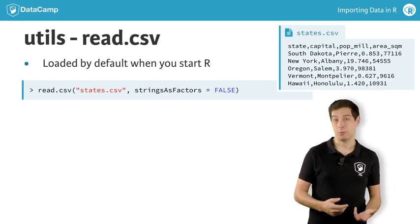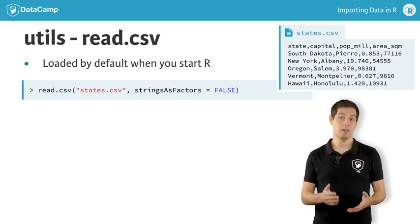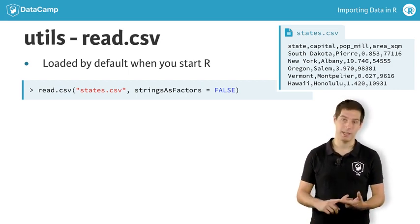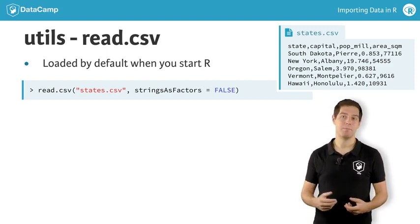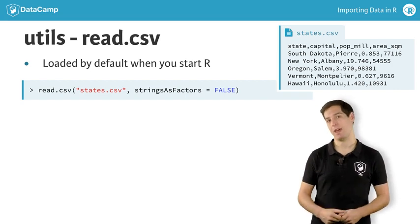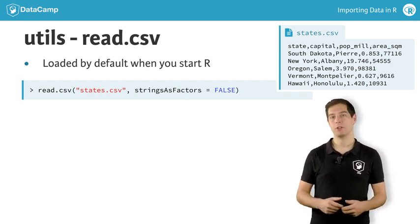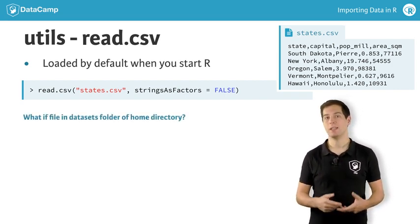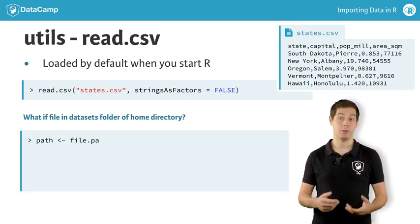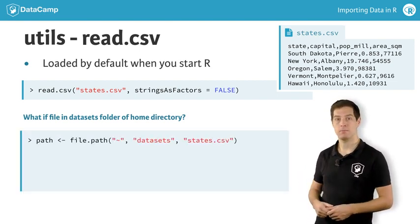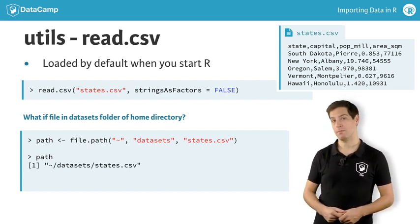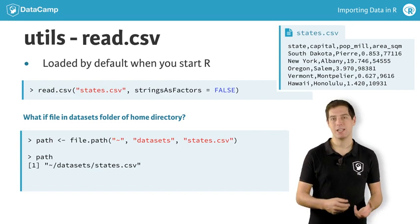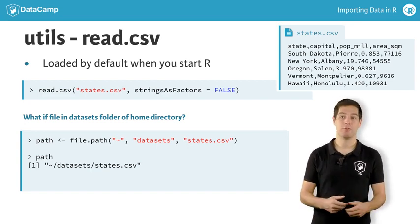If your file is located somewhere else, things get tricky. Depending on the platform you're working on — Linux, Microsoft, Mac, whatever — file paths are specified differently. To build a path to a file in a platform-independent way, you can use the file.path function. Suppose our states.csv file is located in the datasets folder of the home directory. You can use file.path like this. Because I am working on a Mac, this is the resulting path. I can now use this path inside read.csv to point to the correct file.